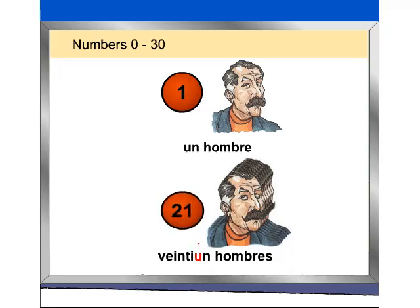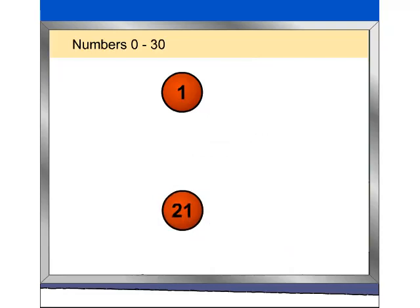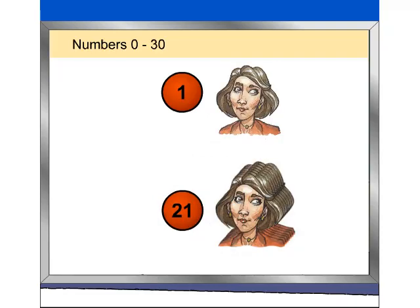Muy bien. Before feminine nouns, uno changes to una: una mujer, veintiuna mujeres.